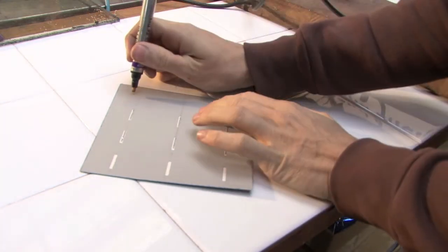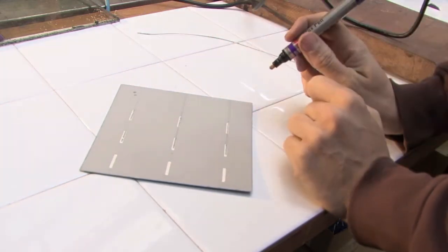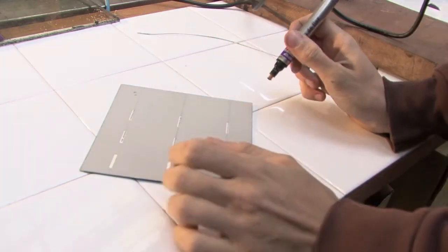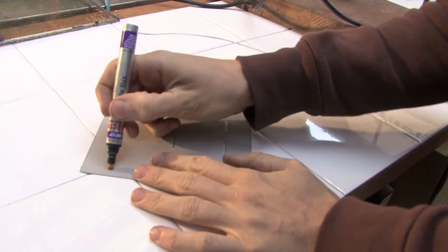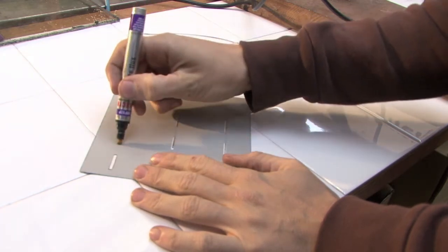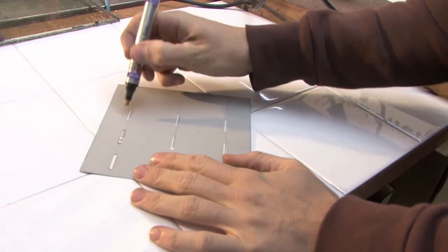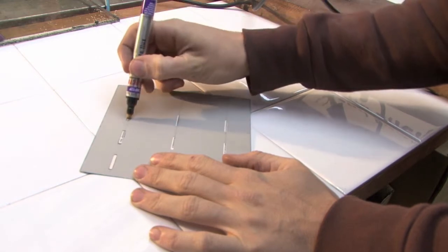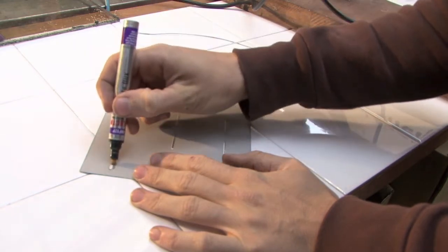So you get your flux pen, you can just give it a little press down to see that it's definitely not run out. And then we're going to run that along each of these white sections on the bottom of the panel.